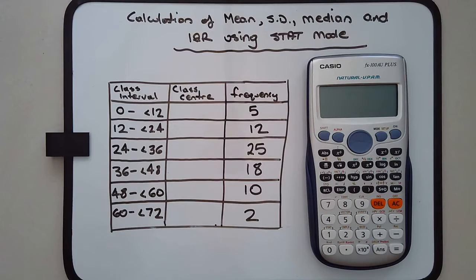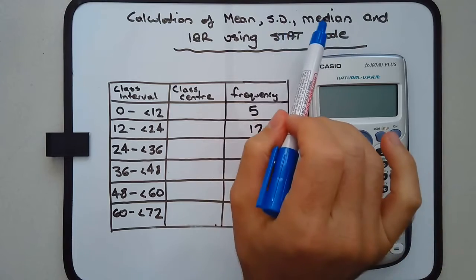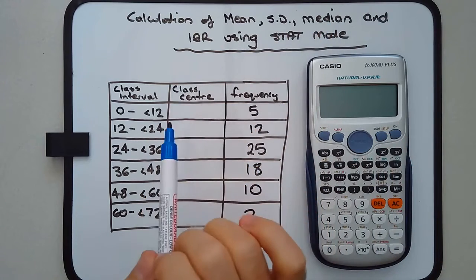The following is a video on using the stat mode on a Casio scientific calculator to calculate the mean, standard deviation, median, and interquartile range.